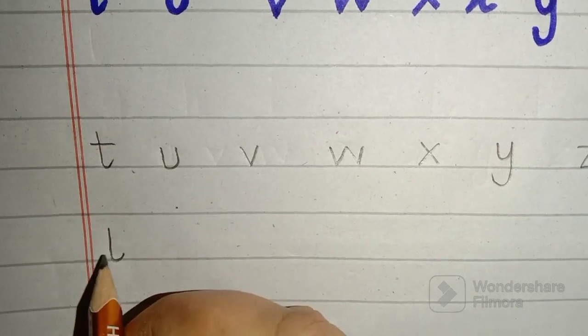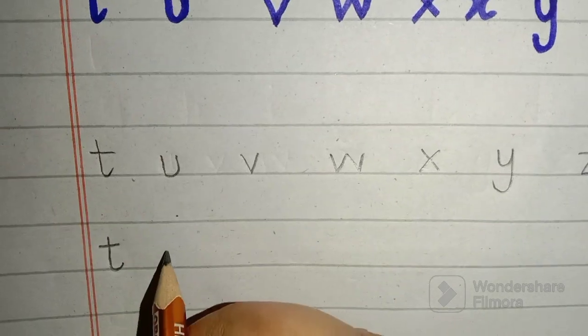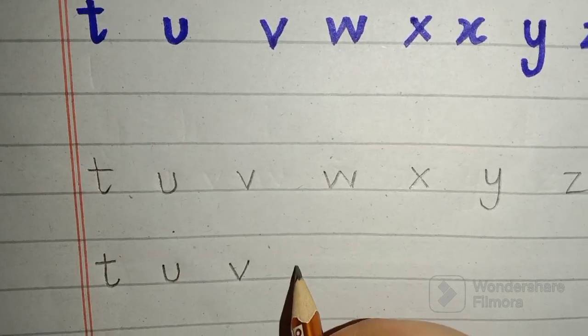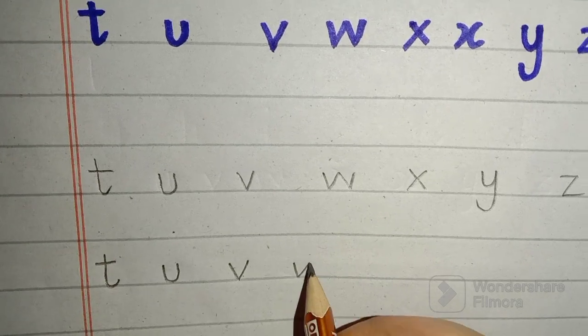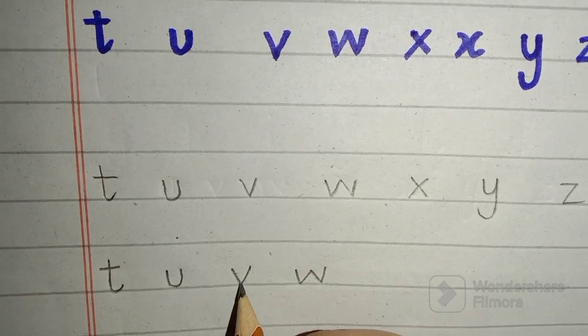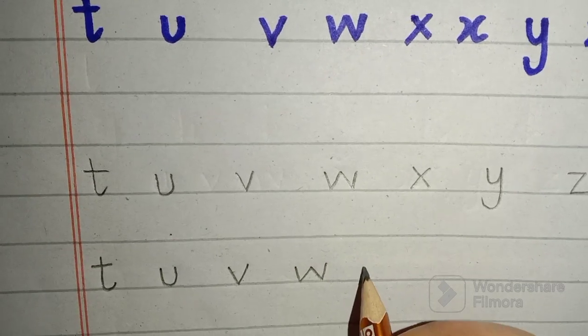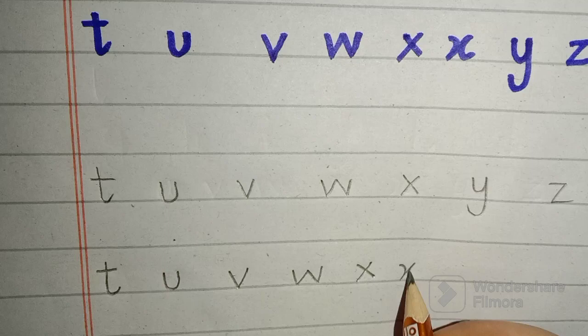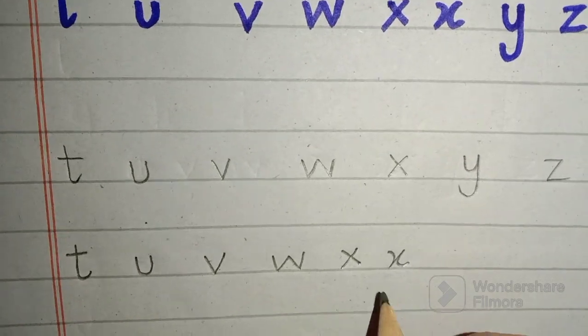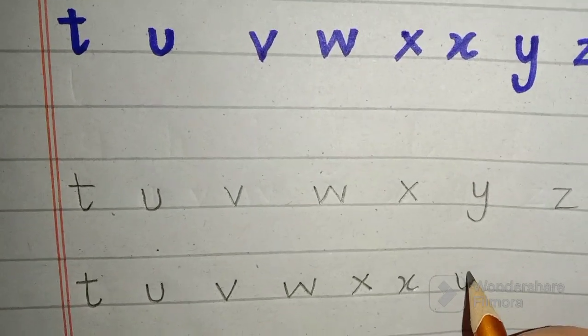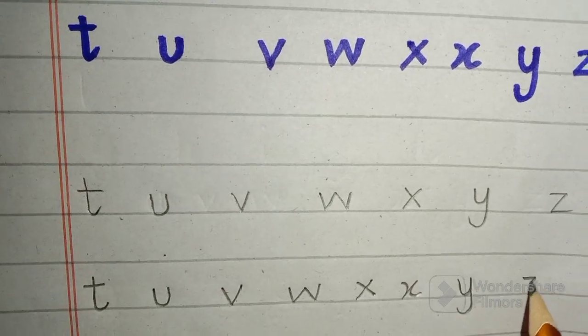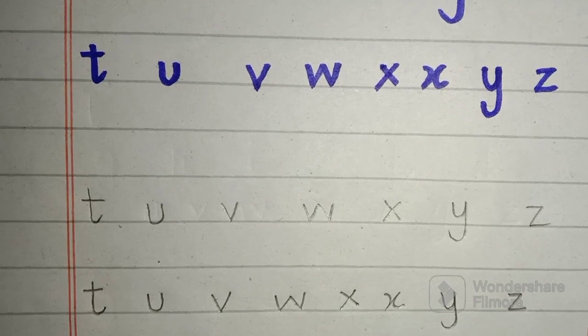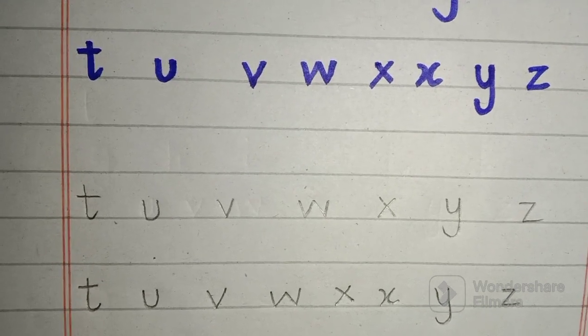Small 't', small 'u', 'v'. For 'w', you have to write 'v' two times. For 'X', you can write it with two different patterns - it's your choice. 'Y' and 'Z'. This is your today's lesson. Practice your lesson.